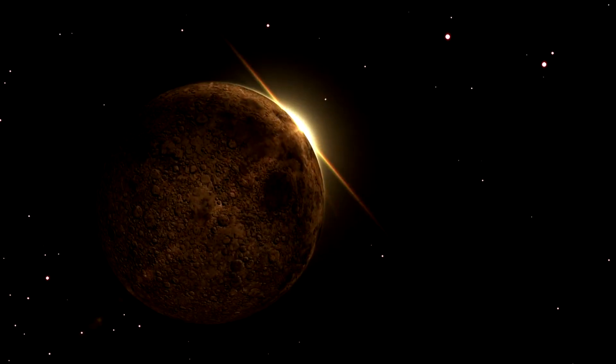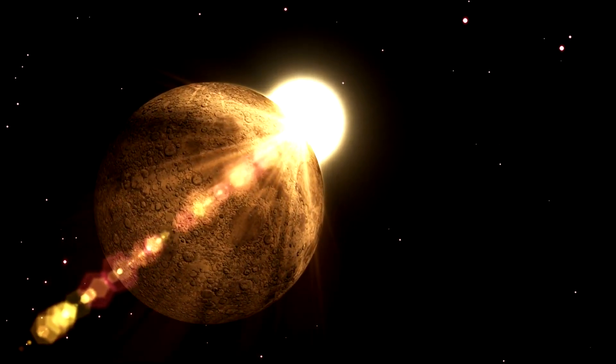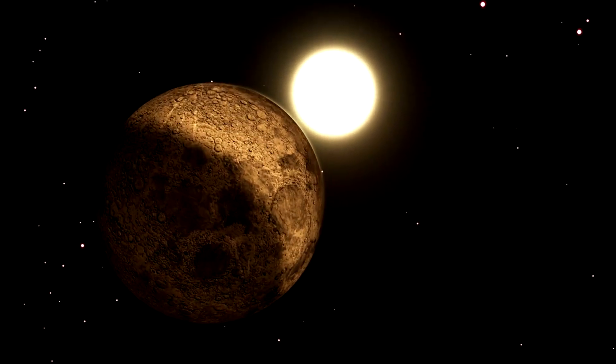As their light traveled to Earth, the huge mass of the sun bent the light, forcing it to travel on a curved path, deflected by around 1.7 arc seconds, just as Einstein had predicted.